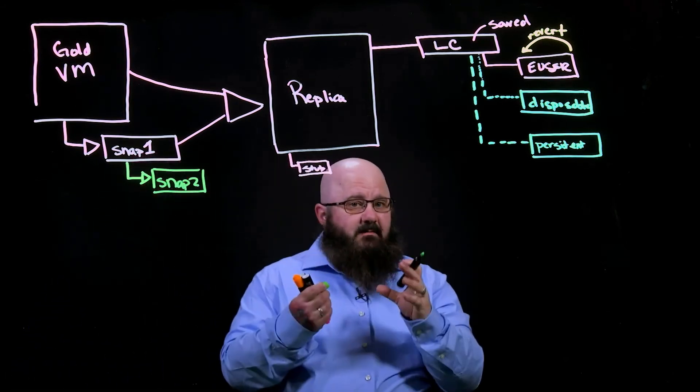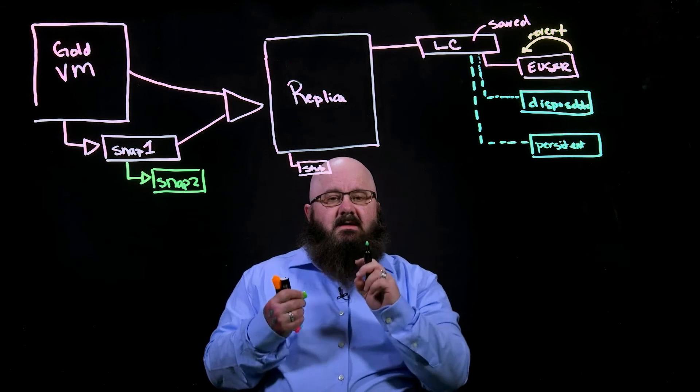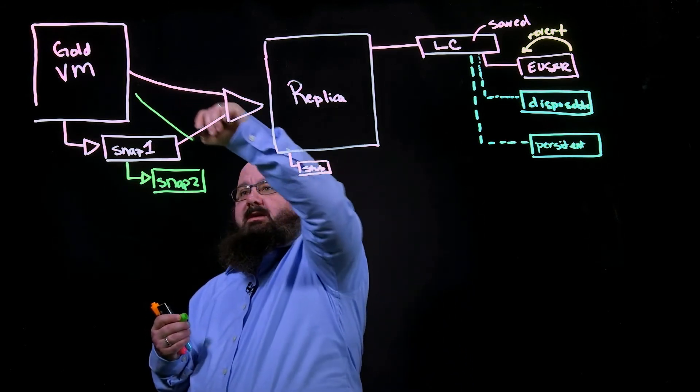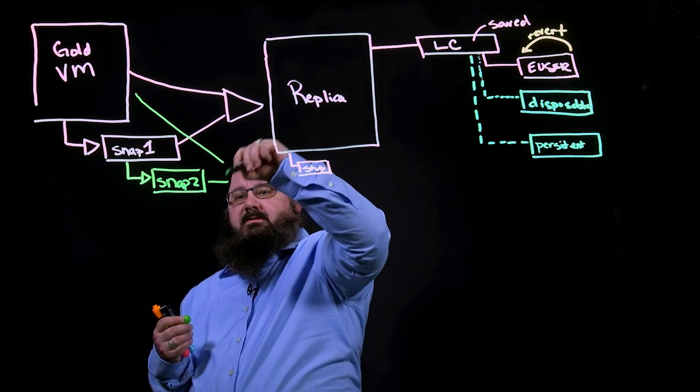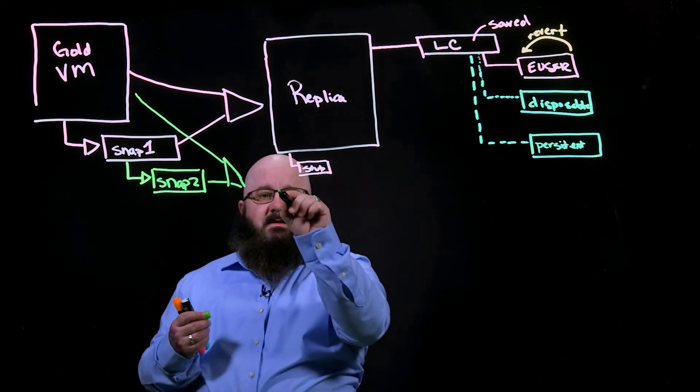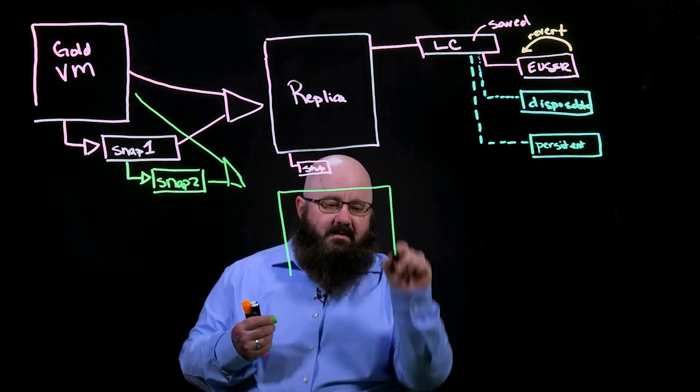And so we tell composer: it's time to recompose. What composer will do is take our gold master and the snap, and from that, we'll create a new replica.